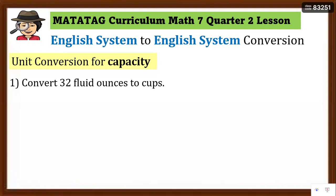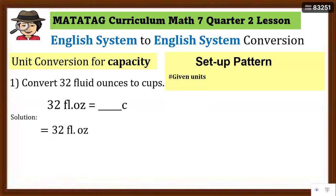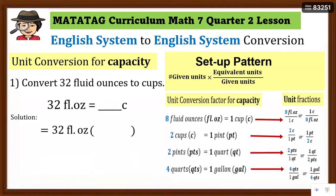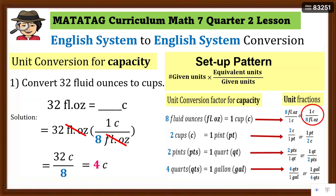Number 1: Convert 32 fluid ounces to cups. Write the equation and set up the pattern. Since the given unit is fluid ounces going to cups, the unit fraction needed has fluid ounces in the denominator and cups in the numerator — that is 1 cup over 8 fluid ounces. Cancel the fluid ounces, then multiply: 1 cup times 32 divided by 8 equals 4 cups. So 32 fluid ounces equals 4 cups.